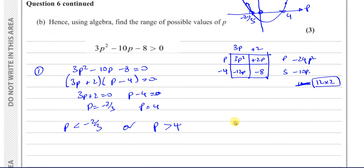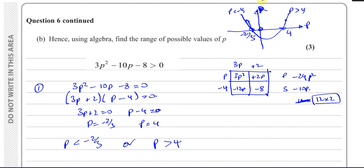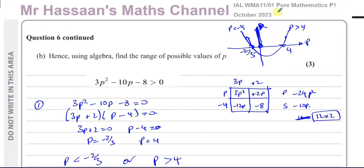That completes Part b. When solving a quadratic inequality, picturing the parabola is very important — it helps you decide where the expression is greater than zero and where it's less than zero. When the curve is above the p-axis the discriminant is positive; when it's below, the discriminant is negative. Other questions from this paper can be found in the playlist, along with more questions on quadratics and quadratic inequalities. Thank you for watching and see you soon.